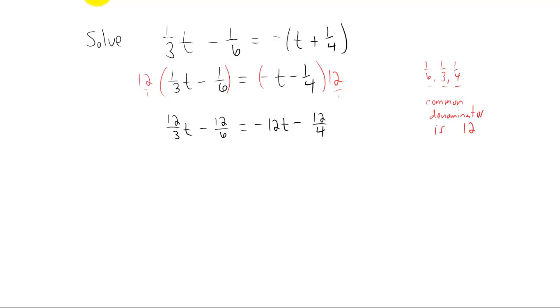But you'll notice that all of our fractions simplify at this point. Twelve-thirds is the same thing as 4. Twelve divided by 6 is the same thing as 2. Twelve divided by 4 is the same thing as 3. So now we have a basic equation that doesn't have any fractions in it, and it's something that at this point is much easier to solve.